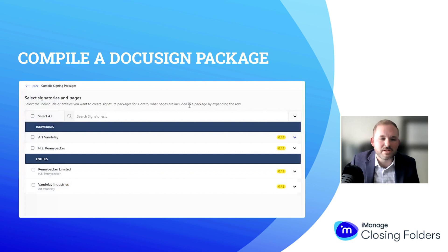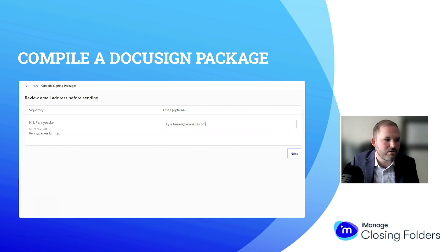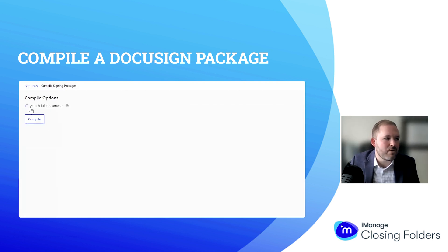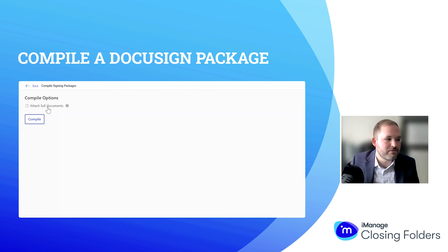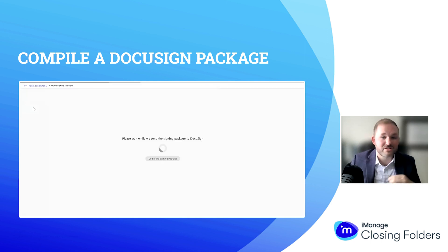Let me show you what it looks like in DocuSign. I'm just going to select that option, select the individual we want the packet created for, and then provide their email address and get the option to either attach the entire document or just those signature pages. Most often what we see from folks on deals is they just send their clients the signature pages — they're sending them a lot of money and they're just going to sign those pages and return them back to the attorney.